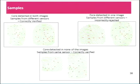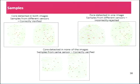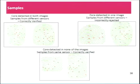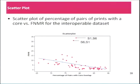Why is this important? Towards the top left, you see the core was detected in both images where samples came from different sensors, and that was correctly verified. Towards the top right, the core was detected in only one image with samples from different sensors, and it was incorrectly rejected because of inconsistent placement. Towards the bottom, the core was detected in none of the images, but the samples came from the same sensor, and the pair was correctly verified. So there was a clear relation between consistent placement and its impact on error rates.